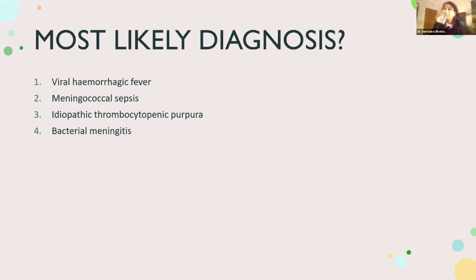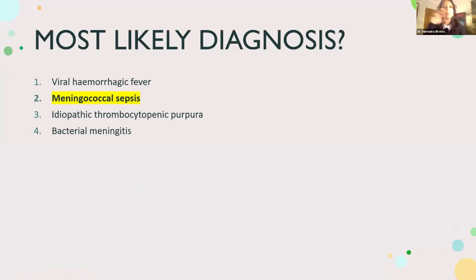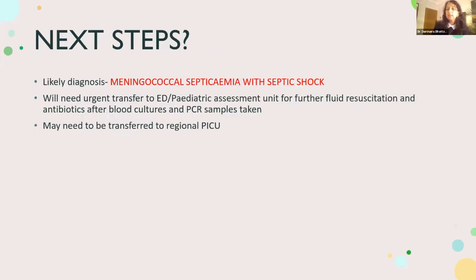The most likely diagnosis is meningococcal sepsis. The vast majority voted correctly. It would not be ITP because children with ITP are generally well — not febrile and not shocked. The next steps are to stabilise the child and arrange urgent transfer to an emergency department or paediatric assessment unit for further fluid resuscitation, antibiotics after blood cultures and PCR samples, and potentially transfer to a regional paediatric intensive care unit.